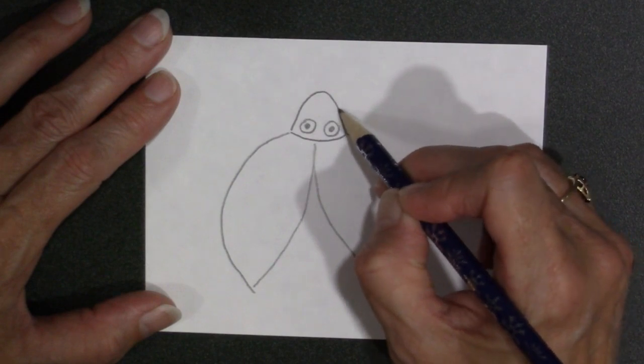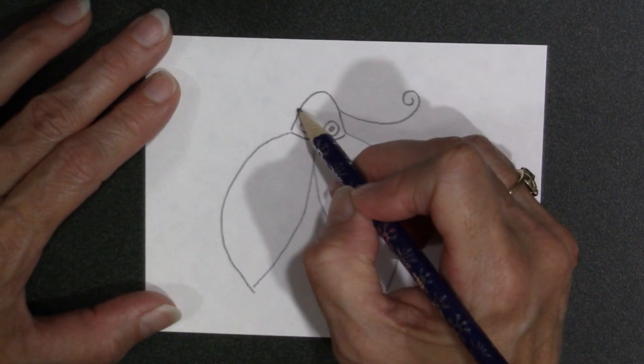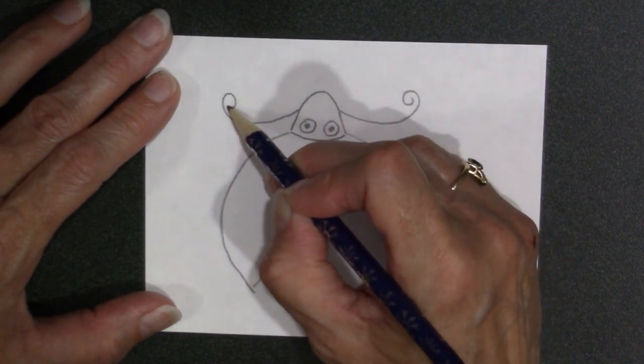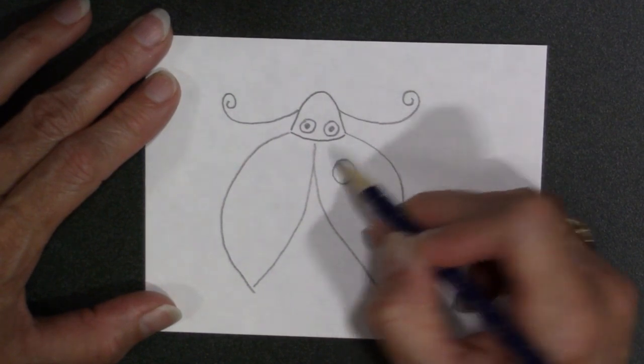You're going to make the little antennas come up and loop around. And then you need to put your spots for your ladybug.